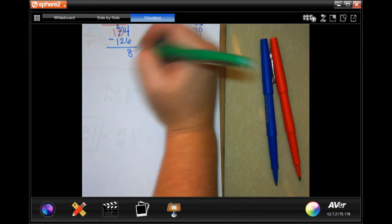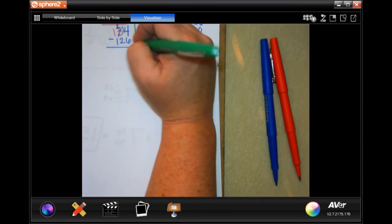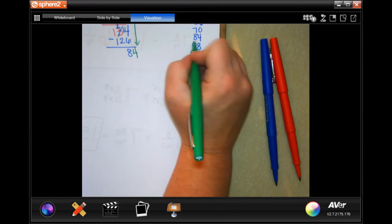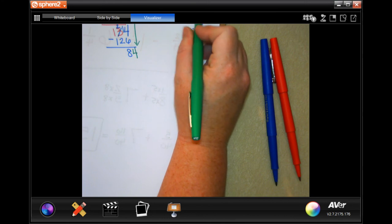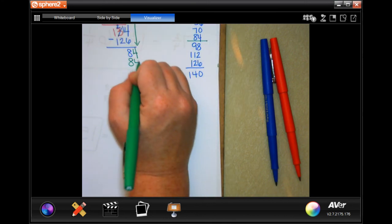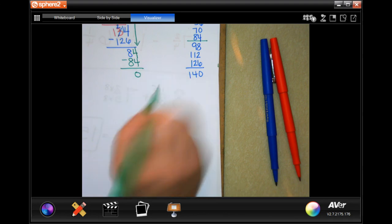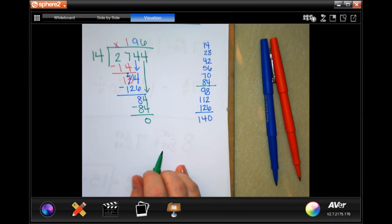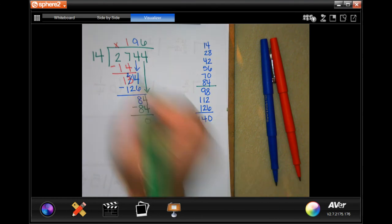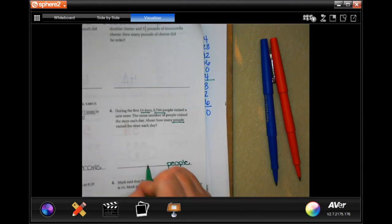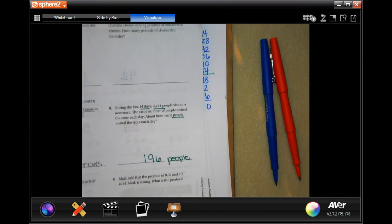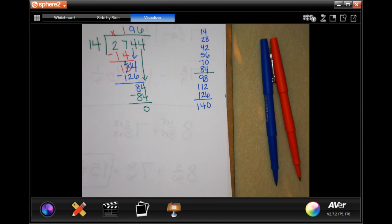So now 8 is definitely smaller than 14. I'm going to bring down my 4 and 14 goes into 84, 1, 2, 3, 4, 5, 6 times, which is 84 subtract 4, 0. You guys can't even see all that. Sorry about that. So 196 people. All right. Make sure you're right there in your work, guys. Now that you can see it.